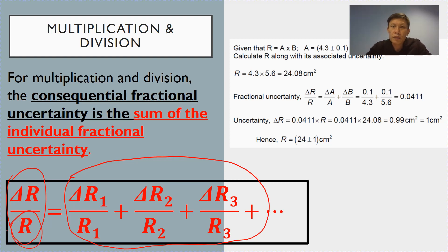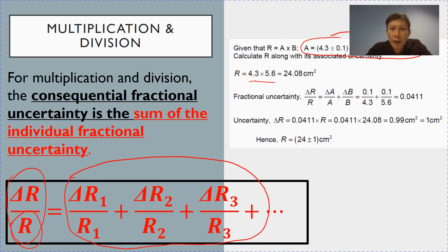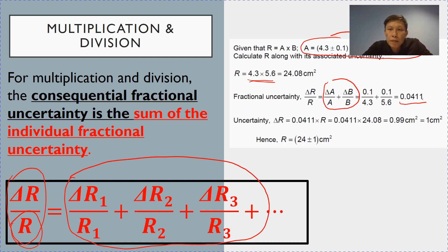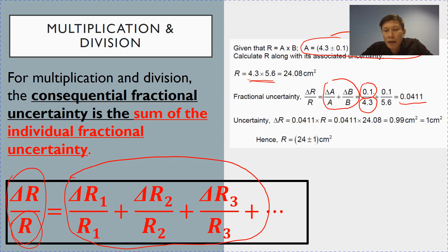Let me illustrate. If A and B are of these values and you are going to multiply A and B, the first step is to sum up the fractional uncertainty of A and B. The fractional uncertainty is your actual uncertainty divided by the value of A itself. You do the same for B, sum these two fractions up, and you get the final fractional uncertainty for R, where R is A times B.